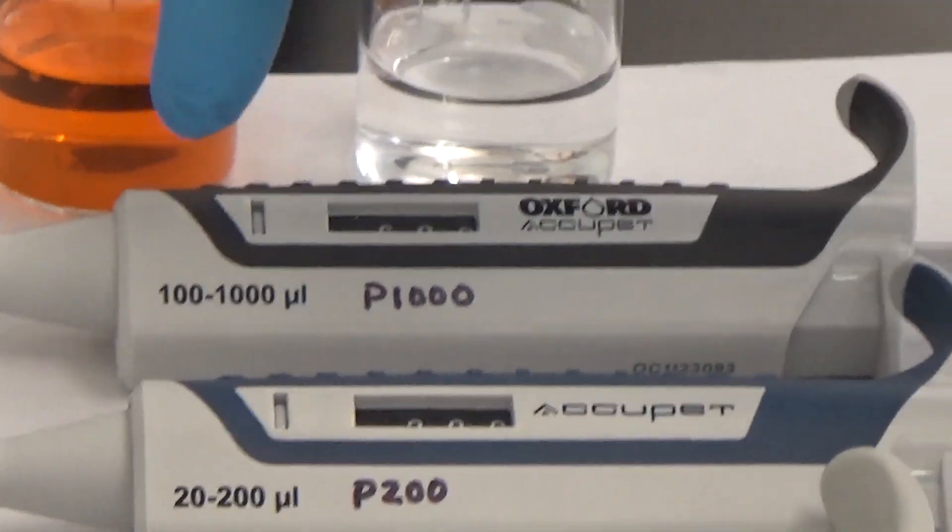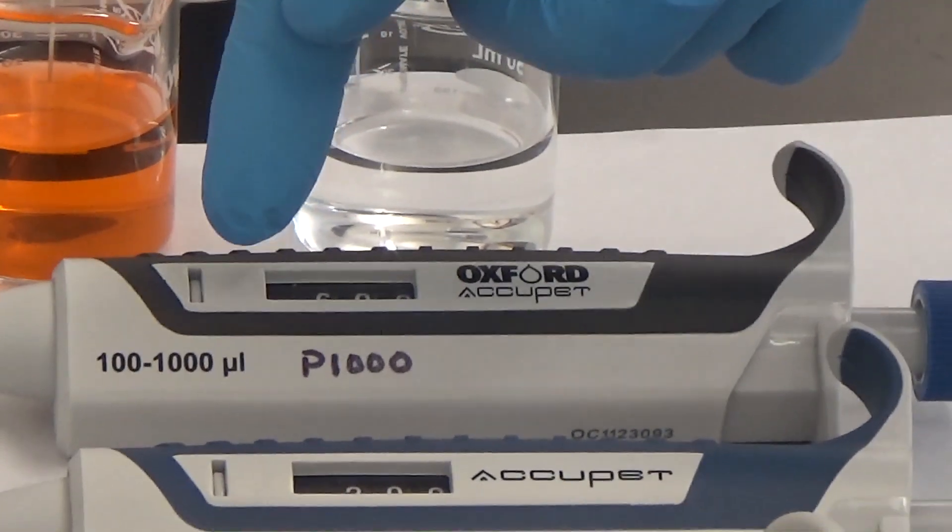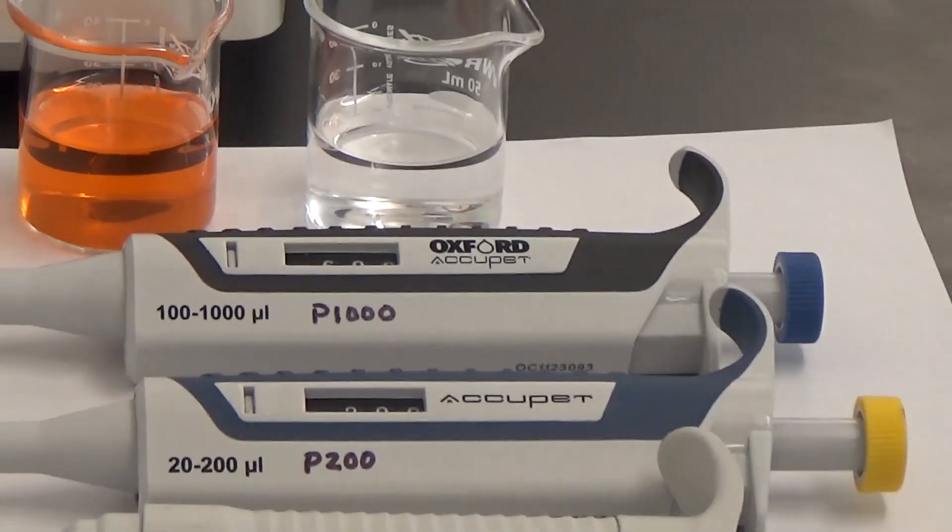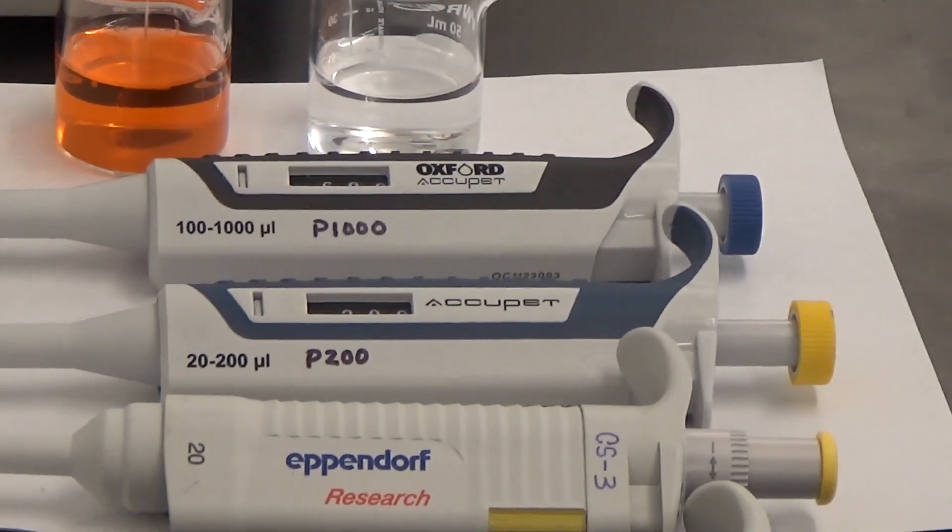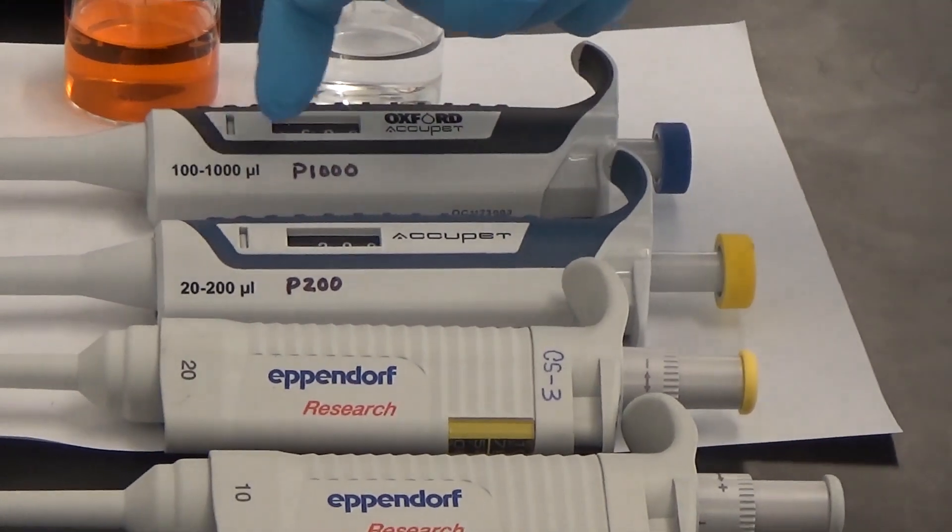This micropipette can measure 100 to 1000 microliters. The maximum volume it can measure is 1000 microliters, so the size of this micropipette is P1000.